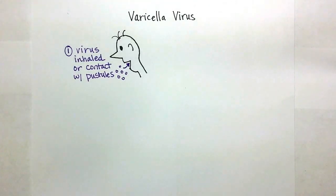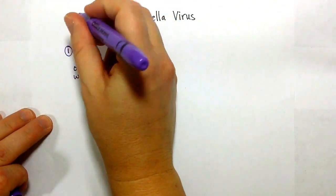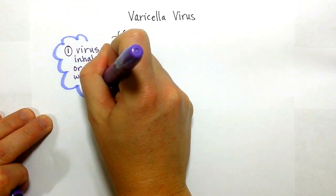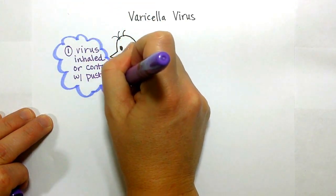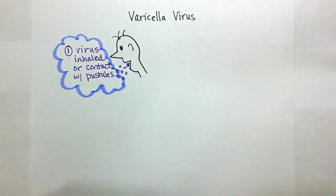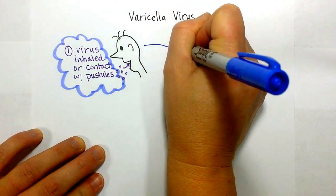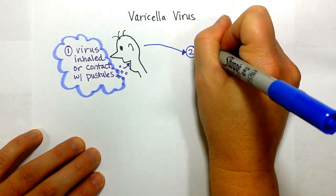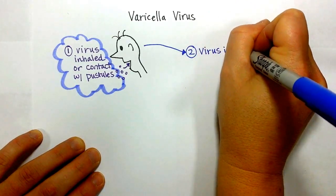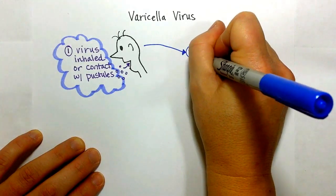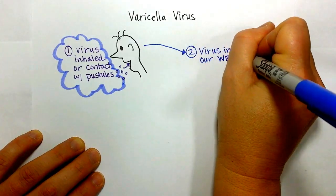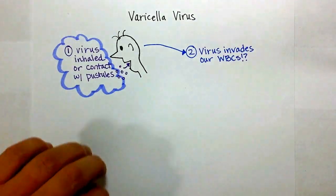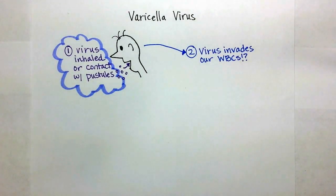Step number two is kind of shocking — this virus is so successful because it actually invades our own white blood cells. So for step number two, the virus invades our white blood cells. It's definitely taking advantage of our own immune system for its needs.